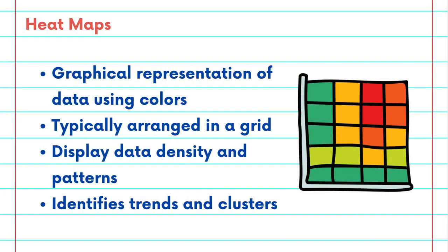A heatmap is a graphical representation of data values using a color spectrum. It's typically arranged in a grid, and each cell's color intensity corresponds to the magnitude of data it represents.